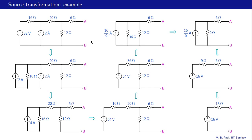Similarly for Vth, we don't need to go all the way using source transformations. We can stop partway and find the open-circuit voltage between A and B directly. Since there is no current in the 6 ohms resistance, Voc is the same as the voltage drop across the 12 ohm resistance, which can be obtained by voltage division: 12 divided by (12 plus 36) times 64 volts, giving us the same answer.